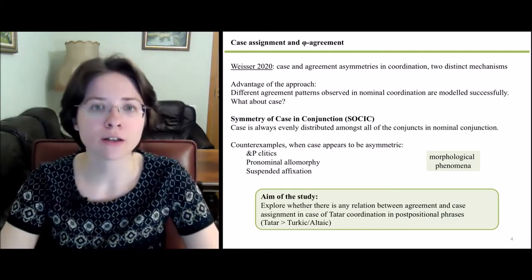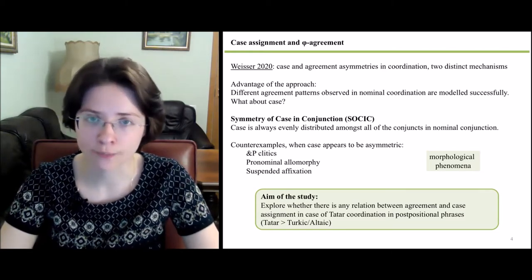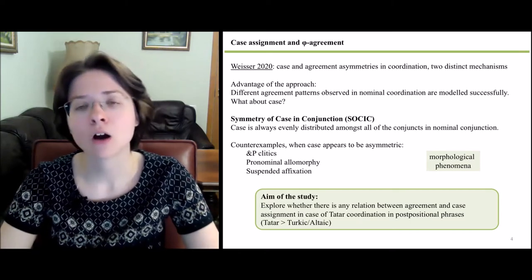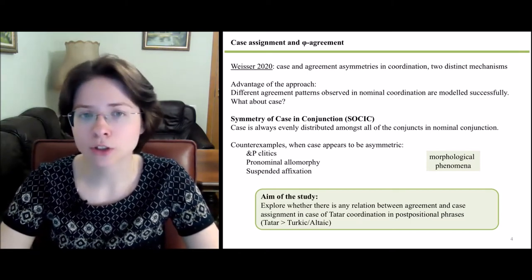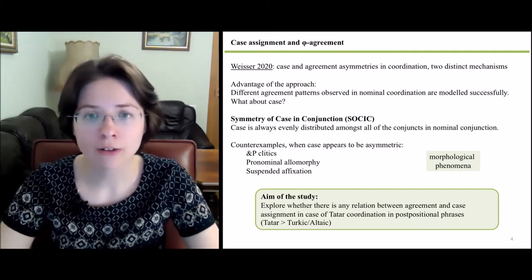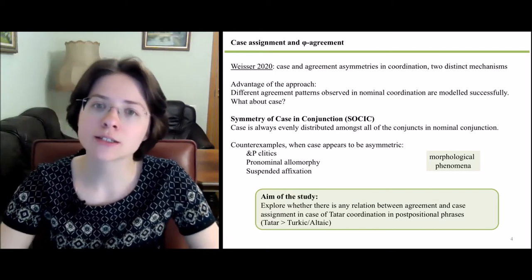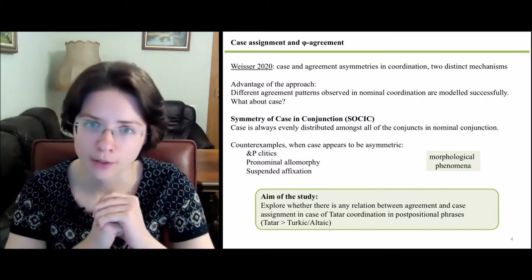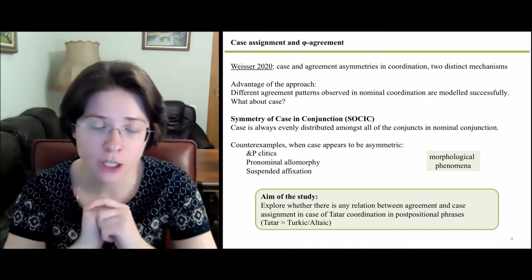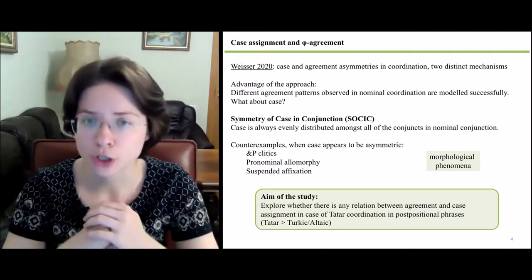With respect to case, Philip Weiser suggests the so-called symmetry of case in conjunction generalization, which says that case is always evenly distributed among all of the conjuncts in nominal conjunction. However, a great source of concern for this generalization are coordinations in which conjuncts differ in morphological case marking. Philip Weiser argues that such counterexamples should receive a different explanation and are intrinsically morphological phenomena.